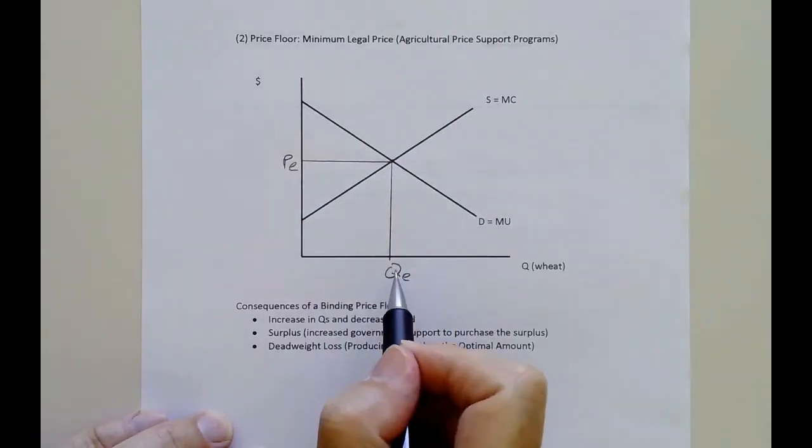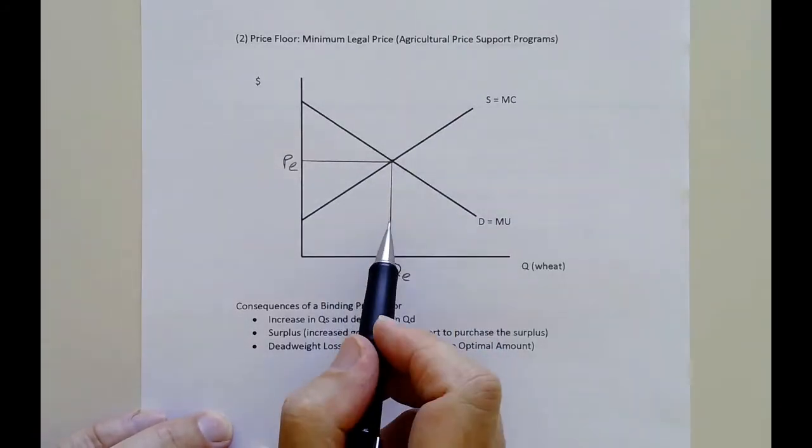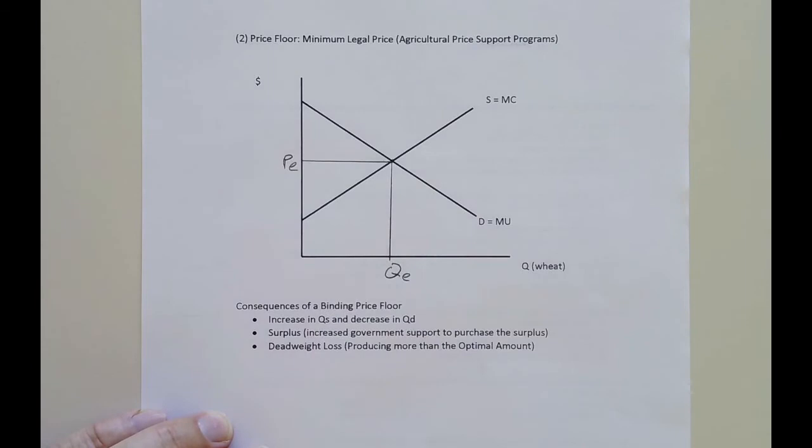Which is why with the ceiling and we're producing less, we're producing less than the optimal. We were not producing all the goods where the marginal utility was greater than the marginal cost.